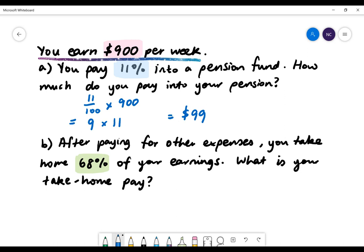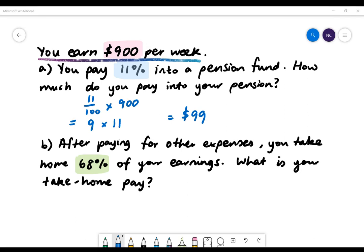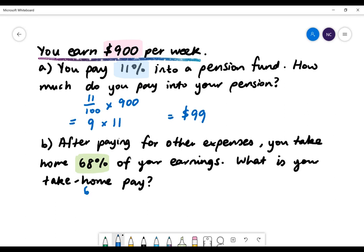Part b: After paying for other expenses, you take home 68% of your earnings. What is your take-home pay? 68% is 68 divided by 100. First, we'll do 900 divided by 100, which will give us 9, multiplied by 68. Here we'll get $612.